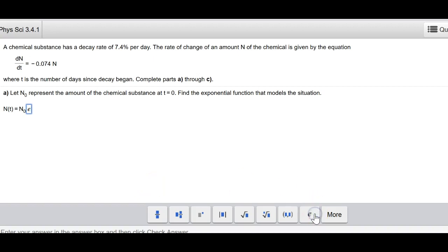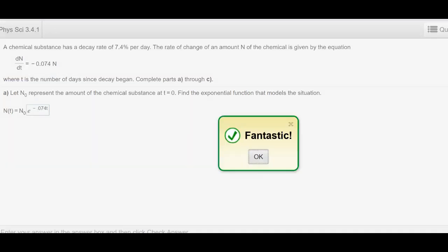So we would be putting e to the minus kt. However, in this case, k equals minus, which is there, 0.074. So I check that answer.